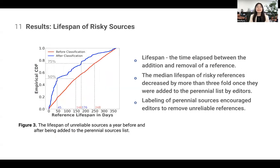We next consider the Lifespan of Risky Sources to evaluate community effort for maintaining Reference Quality. We refer to Lifespan as the time elapsed between the addition and removal of a reference, in number of days. As we can see from this plot, the median lifespan of risky references decreased by more than three-fold once they were added to the Perennial Sources List. This result may indicate that labeling of Perennial Sources encouraged editors to remove unreliable references more quickly.